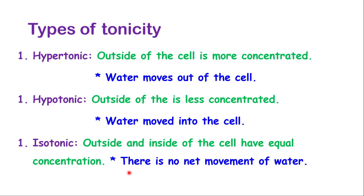Tonicity can be described in three ways. First, hypertonic: the solution outside of the cell is more concentrated compared to the inside of the cell. So if the outside is concentrated, it means the inside must be more dilute. Therefore, water will move out of the cell because inside will have more water available, which means it is dilute inside.